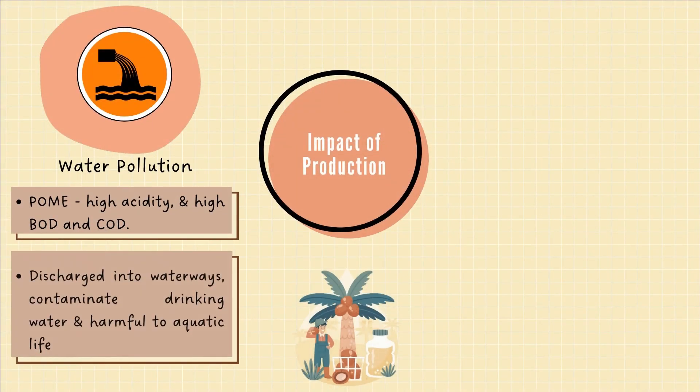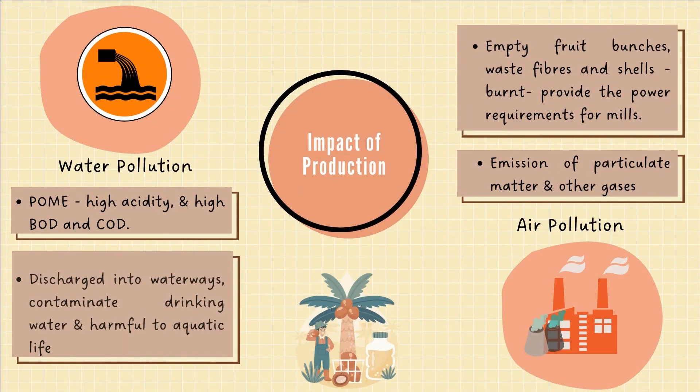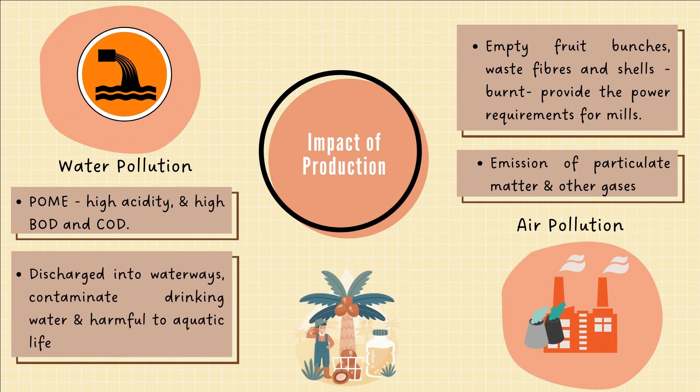Besides, the production of palm oil contributes to water pollution. Large amounts of water are used for palm fruit extraction — as much as 50% of water used in the extraction process becomes palm oil mill effluent. Palm processes have high acidity and high biological oxygen demand (BOD) and chemical oxygen demand (COD). When discharged into waterways, it contaminates drinking water and is harmful to aquatic life through acidity or eutrophication. The process of empty fruit bunches, waste fibers, and shells also contributes to air pollution, as they are burned to provide power for mills, emitting particulate matter, carbon dioxide, and nitrous oxide.